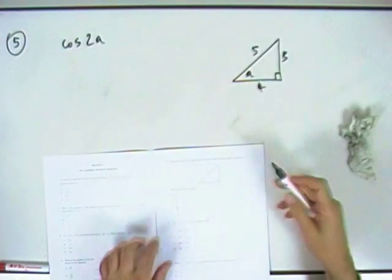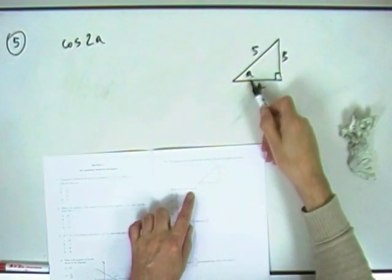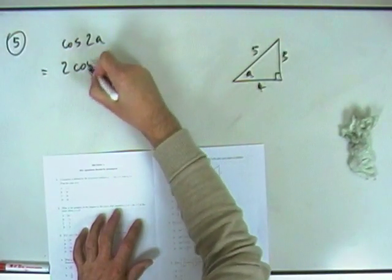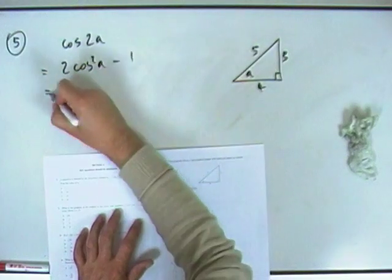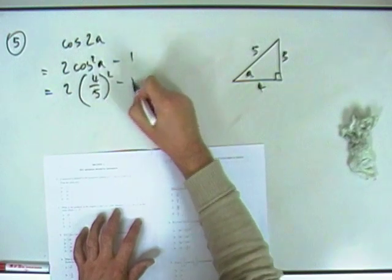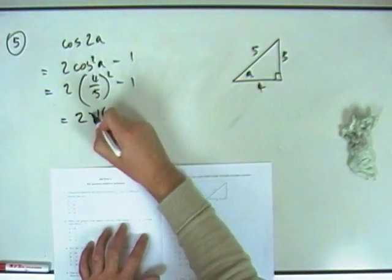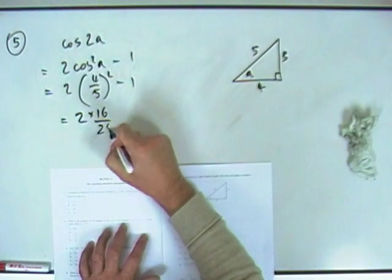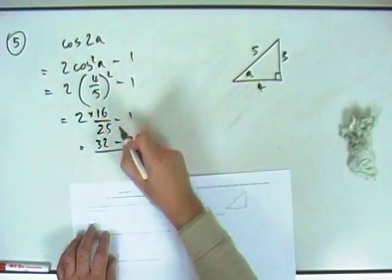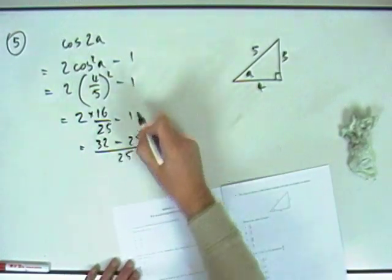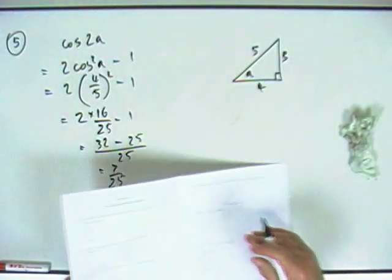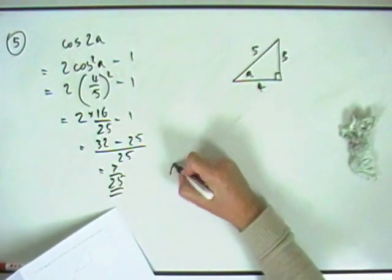Question 5. Right angle triangle. Find the value of the cos of double the angle, double angle formula. Choose one. I'll just use the 2 cos squared minus 1. Why not? 2 cos squared a minus 1. 2 times cos of a, adjacent side, that's 4 fifths, squared minus 1. I'll spell it all out, so that'll be 16. The square of 5 will be 25 minus 1. That means I've got 32 twenty-fifths, but take away another 25 twenty-fifths for that 1, and that's going to leave me with 7 twenty-fifths. 7 twenty-fifths, answer A.